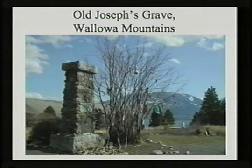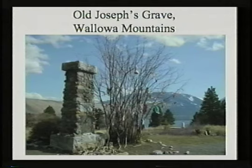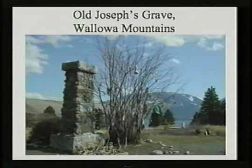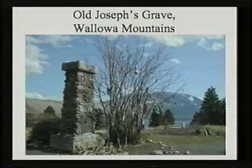The grave of Old Joseph lies at the head of Wallowa Lake. In an unsuccessful appeal to gain return of his people's homeland, Chief Joseph made a speech to Congress in 1879: 'Suppose a white man should come to me and say, Joseph, I like your horses and I want to buy them. I say to him, No, my horses suit me. I will not sell them. Then he goes to my neighbor and says to him, Joseph has some good horses. I want to buy them, but he refuses to sell. My neighbor answers, Pay me the money and I will sell you Joseph's horses. The white man returns to me and says, Joseph, I have bought your horses and you must let me have them. If we sold our lands to the government, this is the way they were bought.'